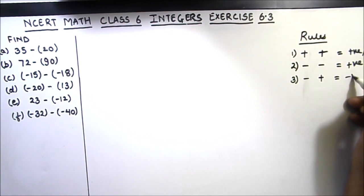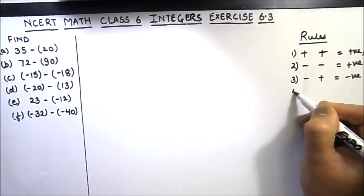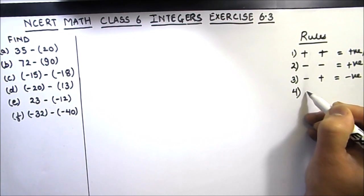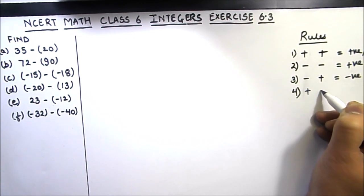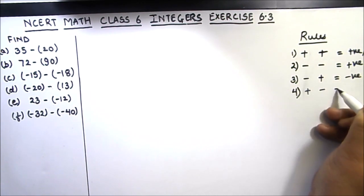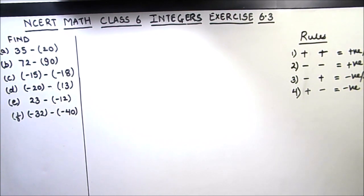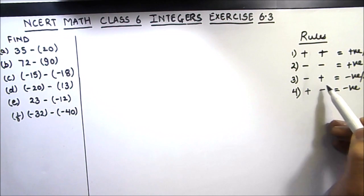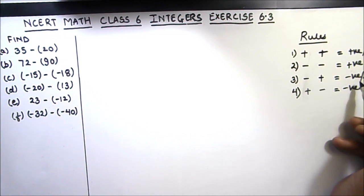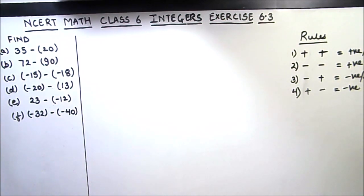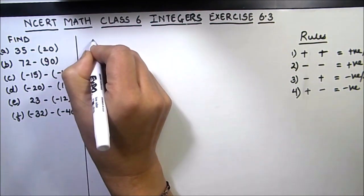The third rule is: if one of the numbers is negative and the other one is positive, the result is negative. The fourth one is: if one of the numbers is positive and the other is negative, the result is also negative, or subtraction. So if the two signs are different, the result is negative. Let us follow these rules and solve the questions.